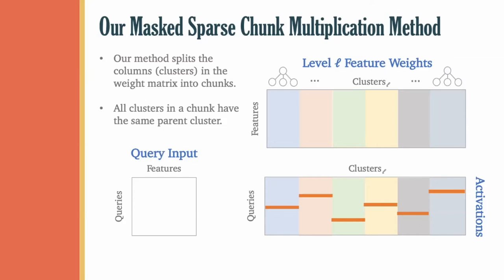Hence, computing a single slice in the activation matrix corresponds to taking the matrix product of a query vector and a chunk in the weight matrix. So our method focuses on making this primitive computation as efficient as possible.